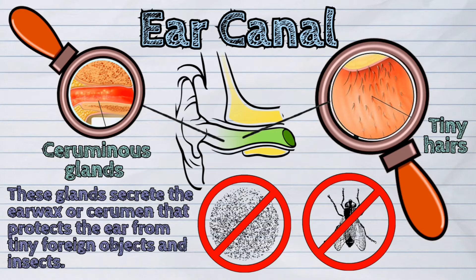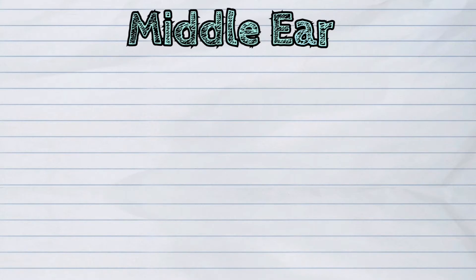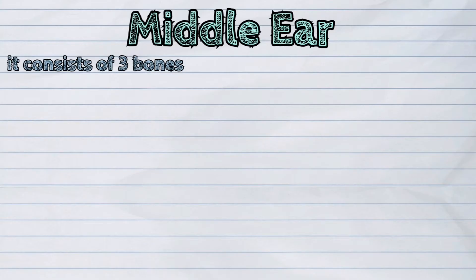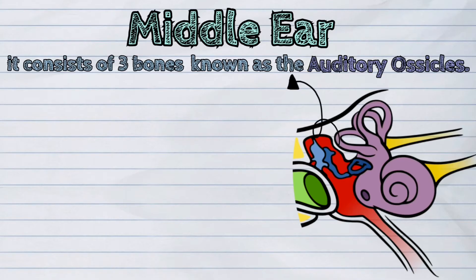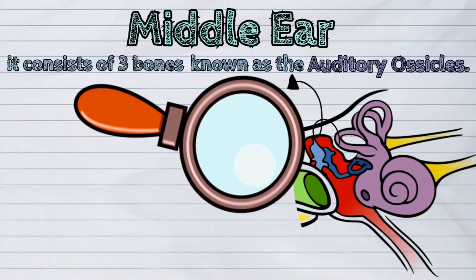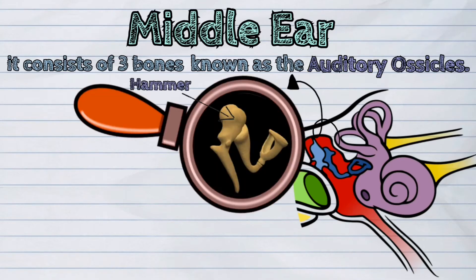The second part of the ear is the middle ear. It consists of three bones known as the auditory ossicles. These ossicles are the hammer or malleus, the anvil or incus, and the stirrup or stapes.